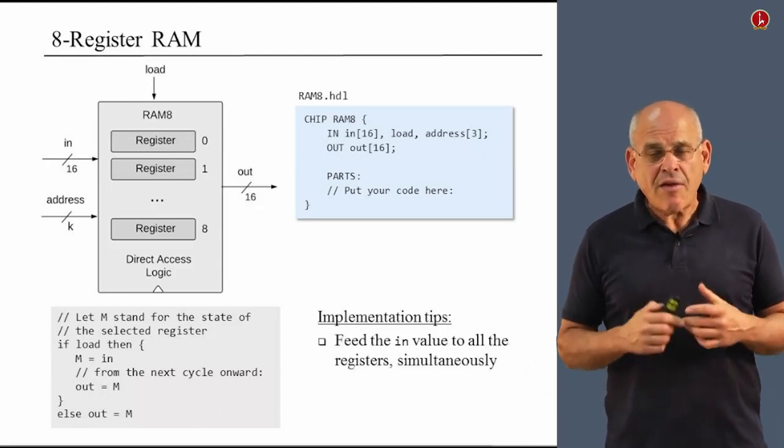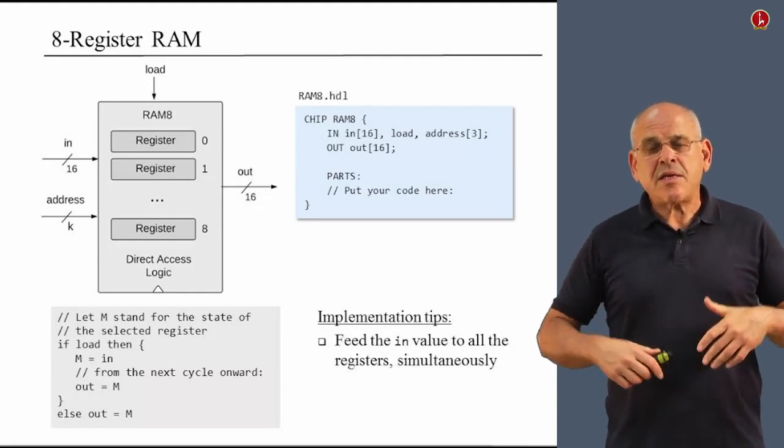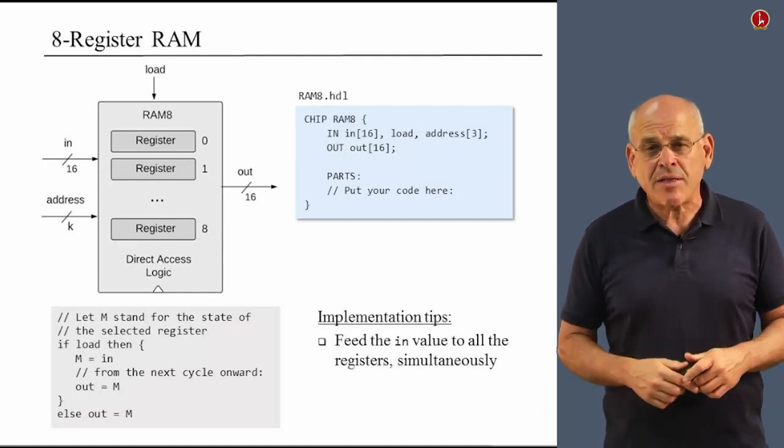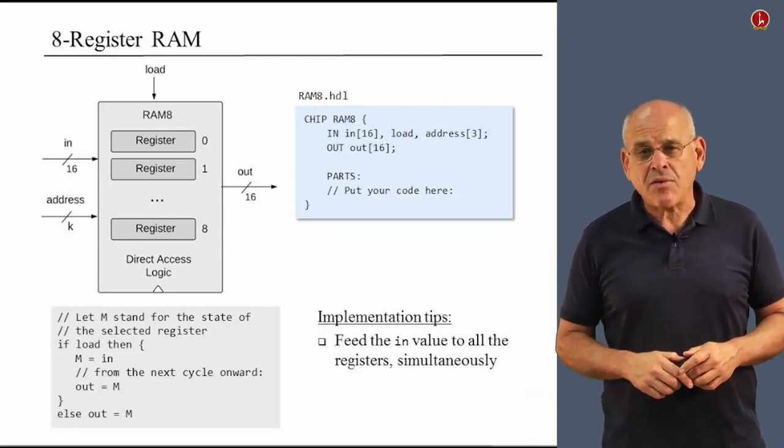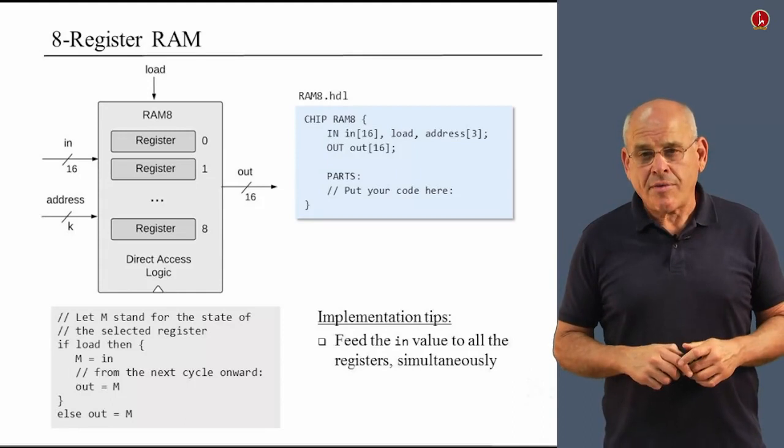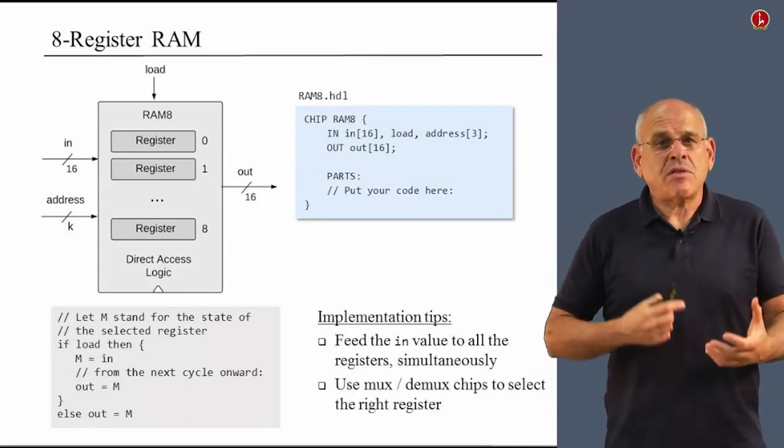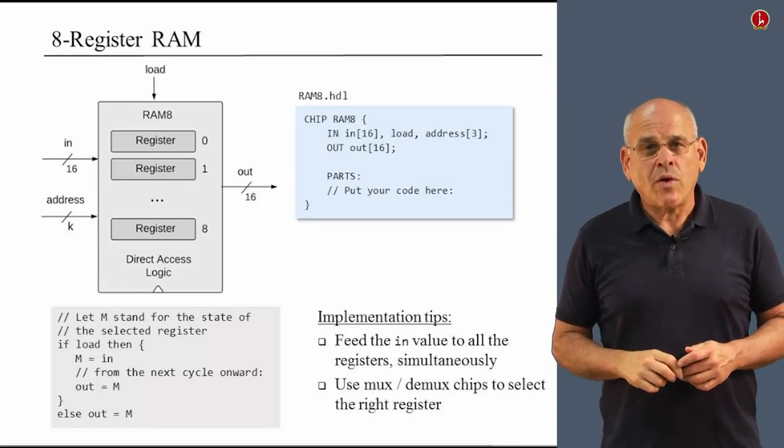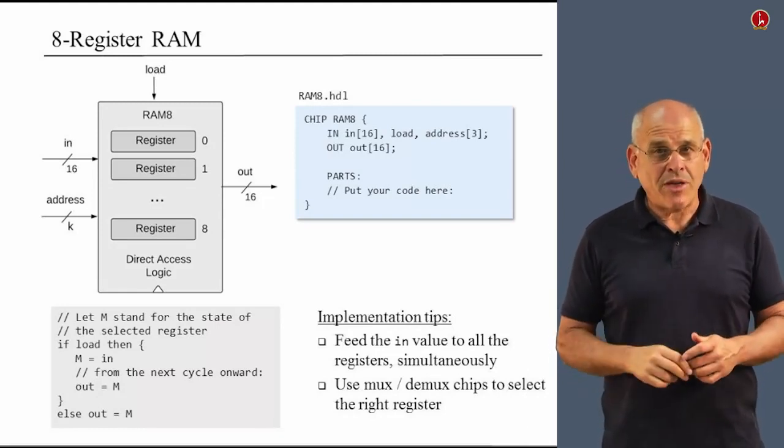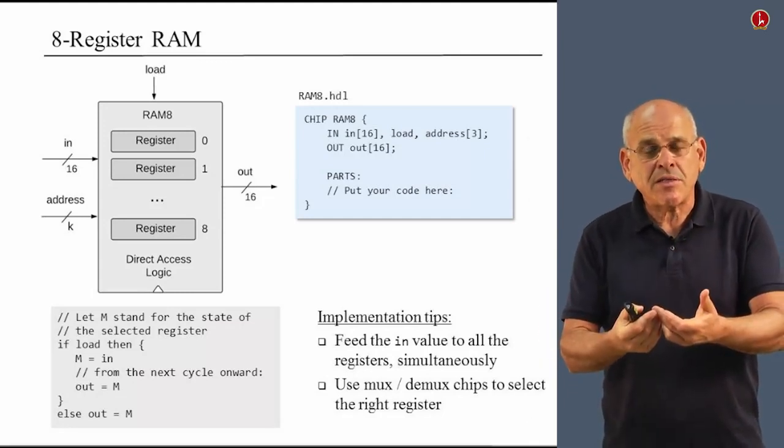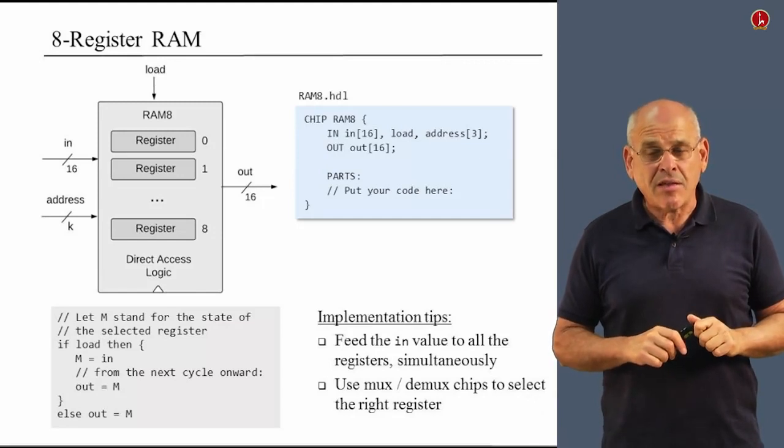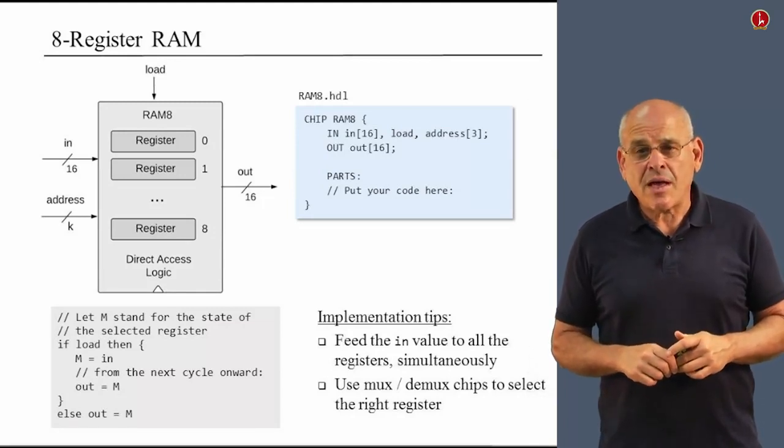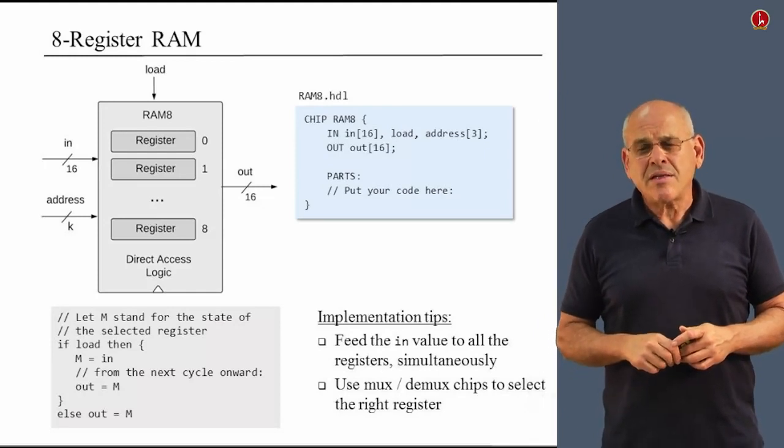The first one is that you have to take the in value and feed it simultaneously to all eight registers. So you use HDL statements to fan out this incoming value and send it to all the registers in the RAM device. And then you use some mux and demux logic in order to select the exact register that you want to be affected by the respective read or write operation. So once again, you send information to all the registers, but only one of them is going to be selected using this mux and demux functionality.